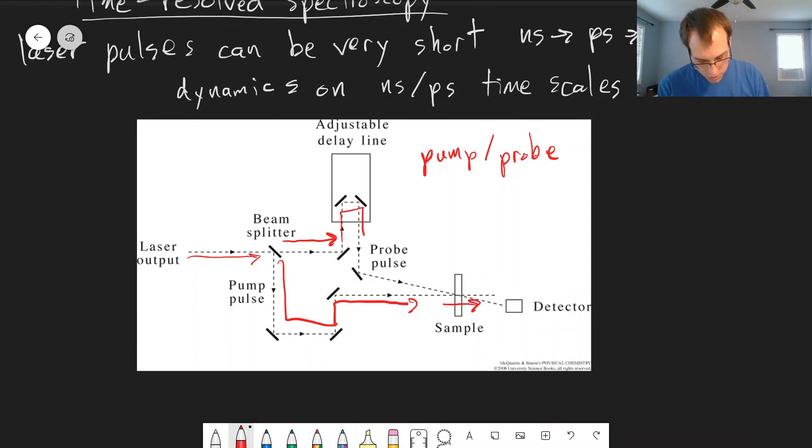It goes through this adjustable delay line. This is a platform here, and we can move these mirrors back and forth. So the further the mirrors move, in this case up, the longer the light will take to go through there. It won't be much of a difference, but it'll be enough that it'll adjust it by that nanosecond or picosecond timescales that we're interested in.